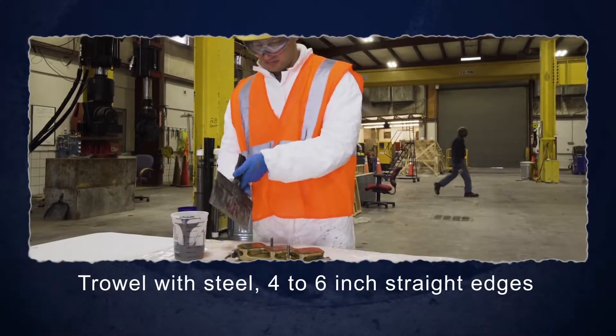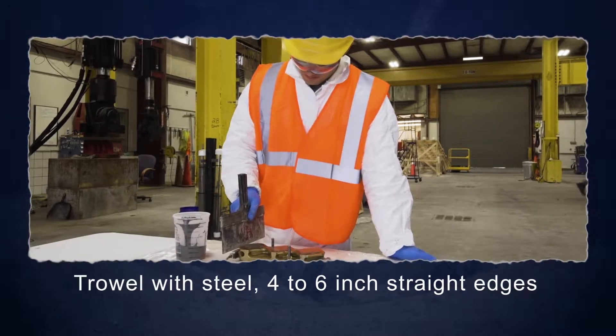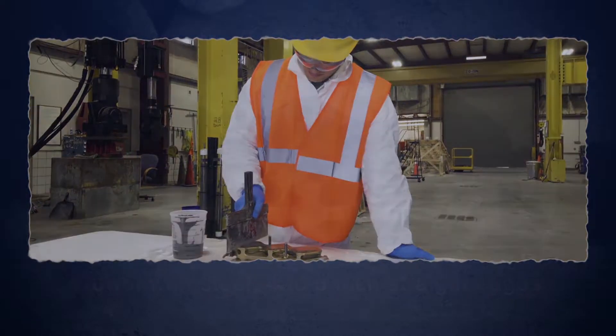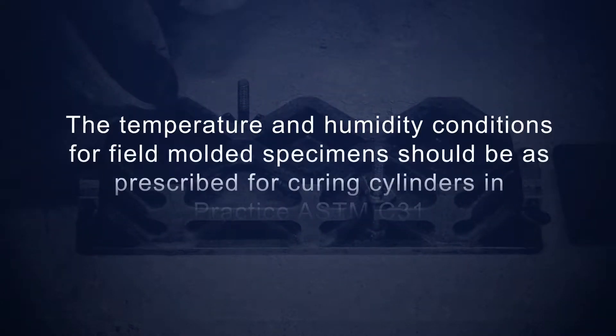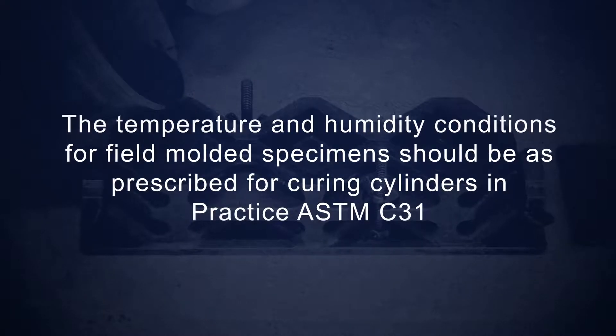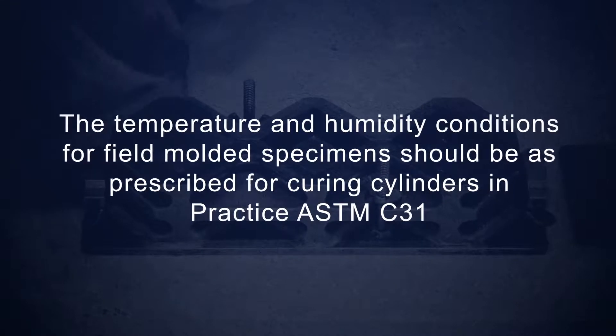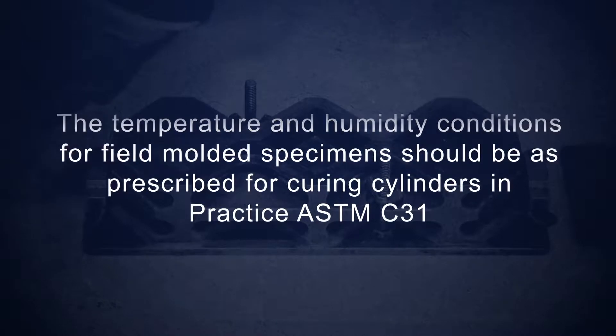A trowel is needed having a steel blade 4 to 6 inches in length with straight edges. The temperature and humidity conditions for field molded specimens should be prescribed for curing cylinders in practice ASTM C31.